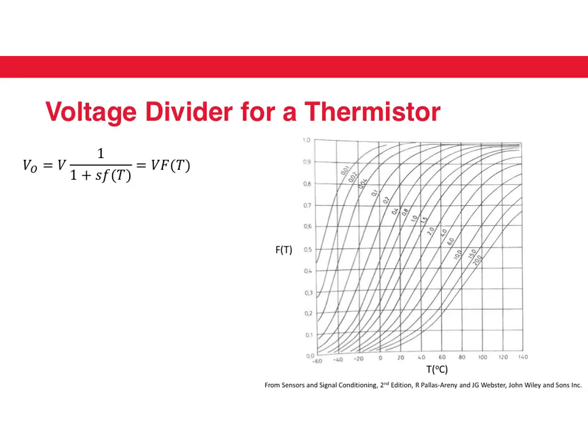If I plot this f of t versus the temperature for different values of s, remember what s is? Essentially, s is given by s is r0 over rf. So r0 is the base resistance of the thermistor, and rf is the fixed resistance in the voltage divider. And if we have that, we can plot f of t for different values of s, and we notice that for this material,